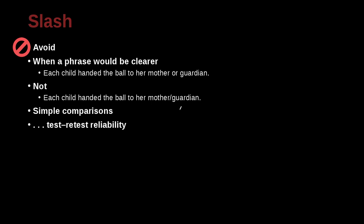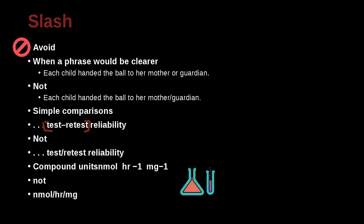Here's an example when you would not use a slash. Test-retest reliability. Not test slash retest reliability. Because what we're saying is that this is a kind of phrase. This is an idea. It is a test-retest. It is not a test or retest or a combination of both or sometimes test, sometimes retest. It's not that way. It's very clear. It's a test, then a retest. And other kinds of compound measurements or ideas that we often use in science such as hours or milligrams.